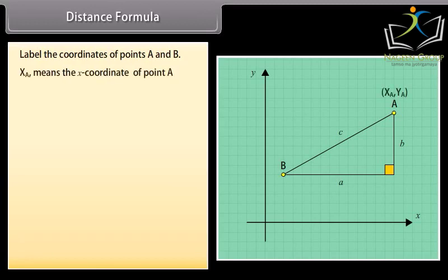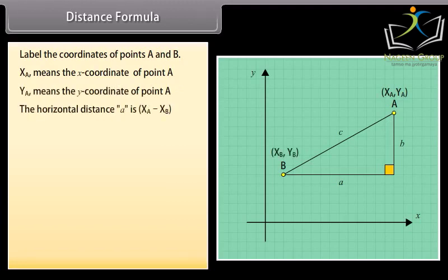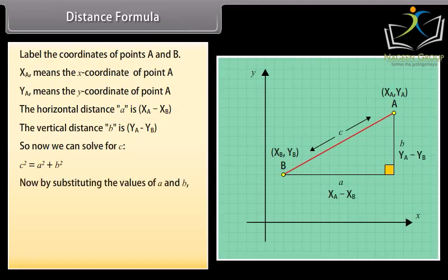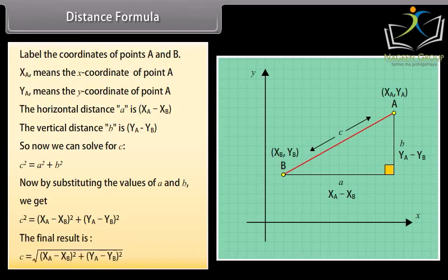Now label the coordinates of points A and B. XA means the x-coordinate of point A, YA means the y-coordinate of point A. The horizontal distance A is XA minus XB. The vertical distance B is YA minus YB. So now we can solve for C which is the distance between the points. C square is equal to A square plus B square. Now by substituting the values of A and B we get C square is equal to XA minus XB whole square plus YA minus YB whole square. The final result is C is equal to under root of XA minus XB whole square plus YA minus YB whole square.